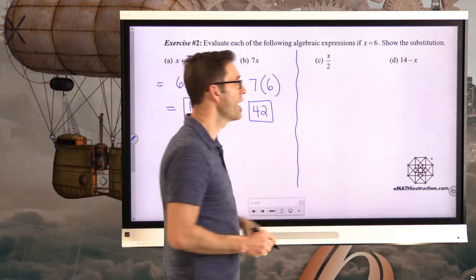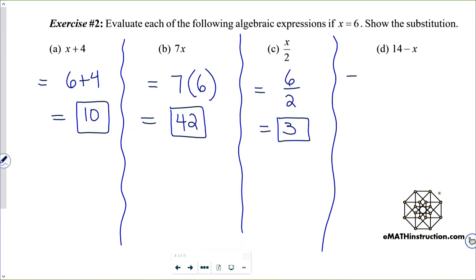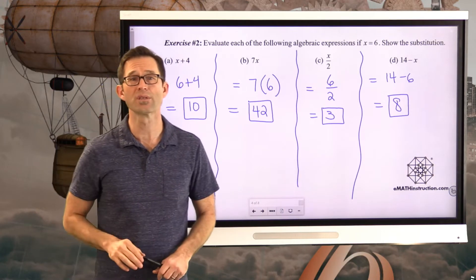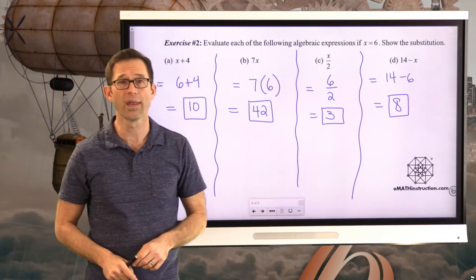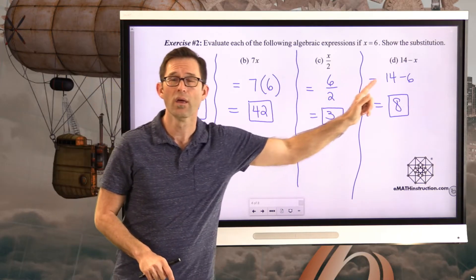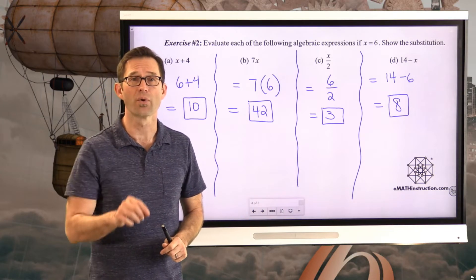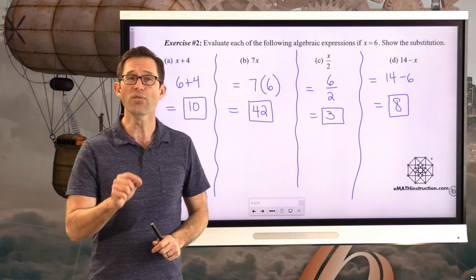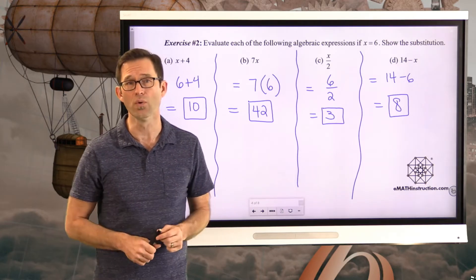X over 2 equals 6 divided by 2, which equals 3. For 14 minus X, that equals 14 minus 6, which equals 8. These are straightforward calculations, but it's very important to show your substitution step. Especially in multi-operation calculations, if you've made a mistake somewhere along the line, your teacher can find it and help you correct it.